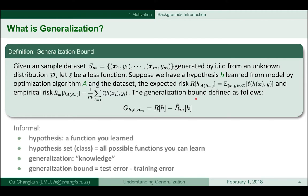Informally, the hypothesis is the function you learned, and the hypothesis set is all possible functions you can learn. The generalization is the knowledge you want to learn. The generalization bound is basically the test error minus training error if you choose the right loss function.